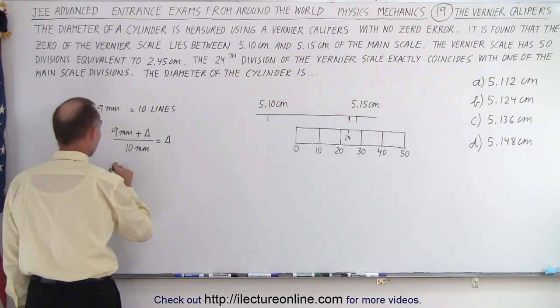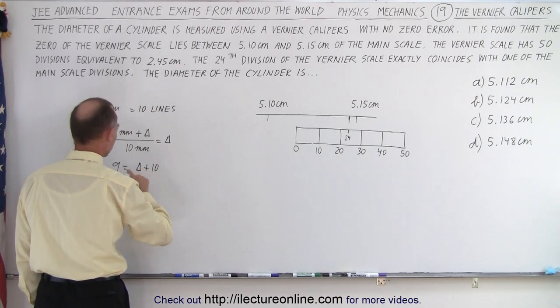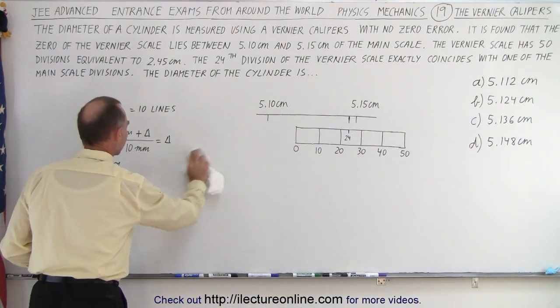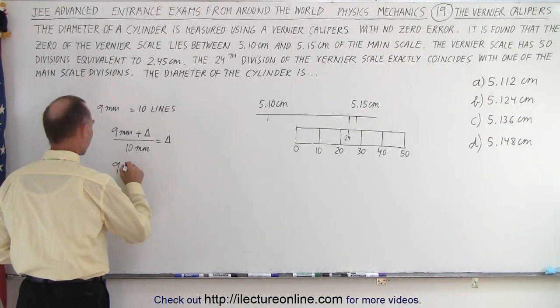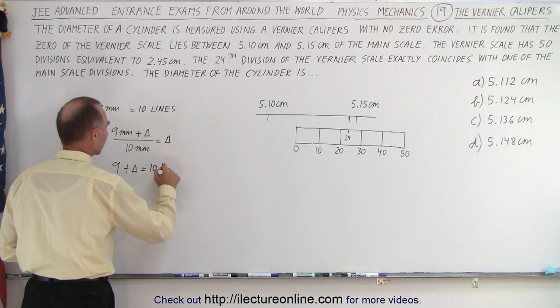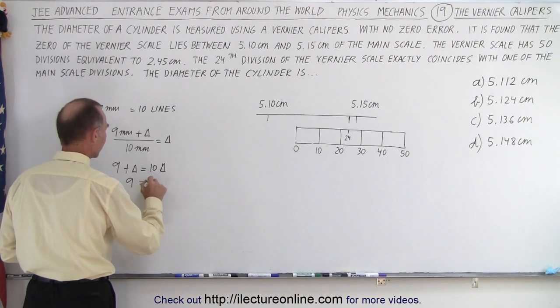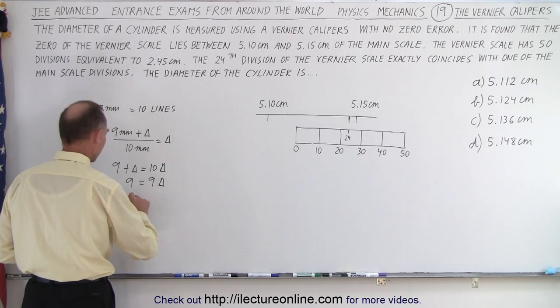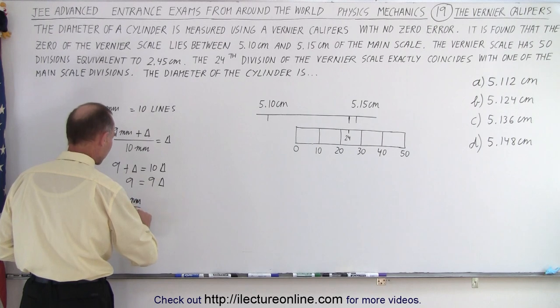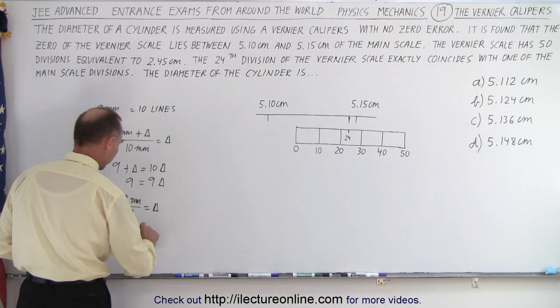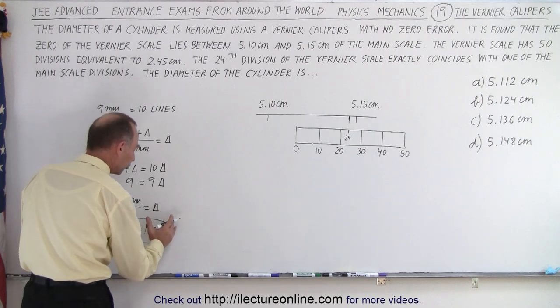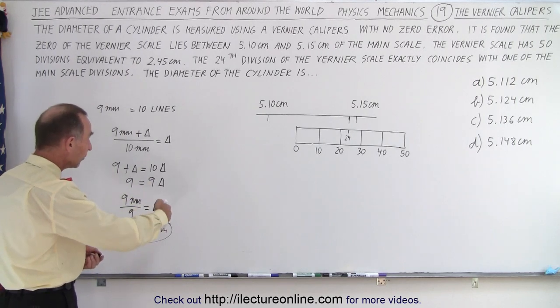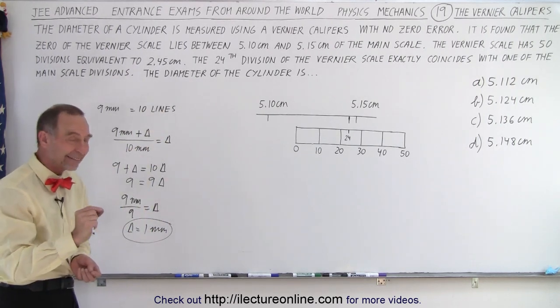So we have 9 plus delta equals 10 delta. Subtracting, we get 9 equals 10 minus 1, which is 9 delta, and this is in millimeters. So 9 millimeters divided by 9 equals delta. Delta equals 1 millimeter. This is the full scale of the vernier that represents 1 millimeter, and then we divide into 10 lines. That means each line represents a tenth of a millimeter.